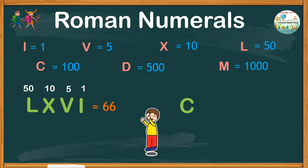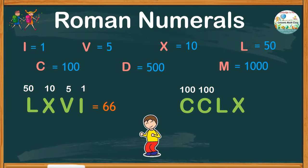Next, C, C, L, X. C is equals to 100, and we have two of them. L is 50, X is 10, and altogether we have 260.